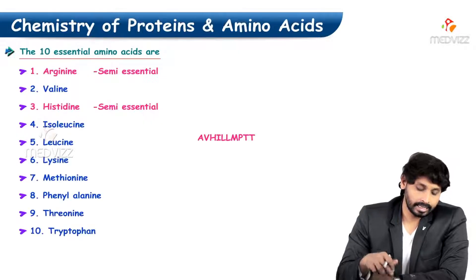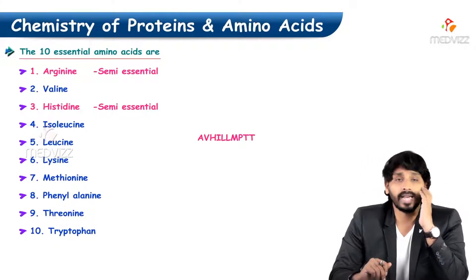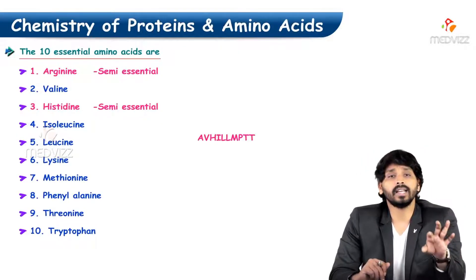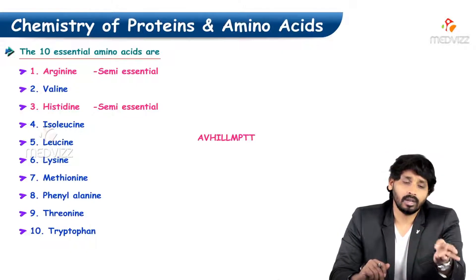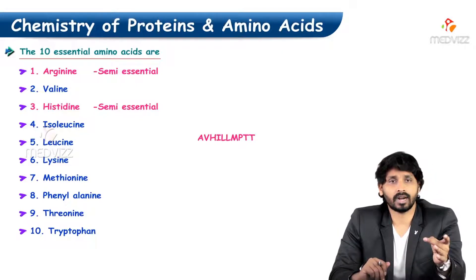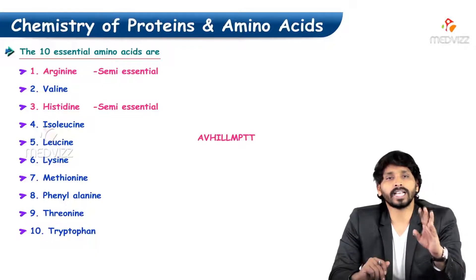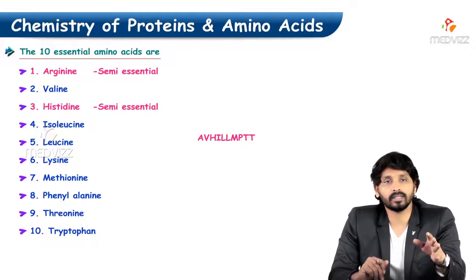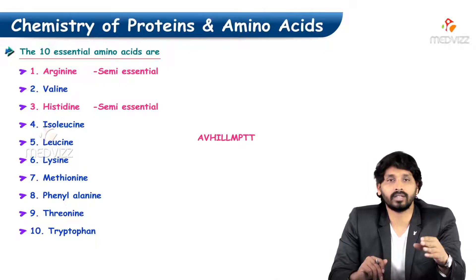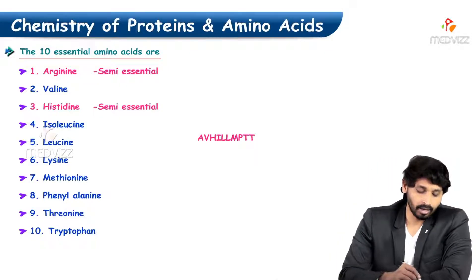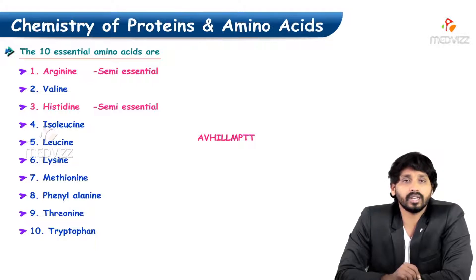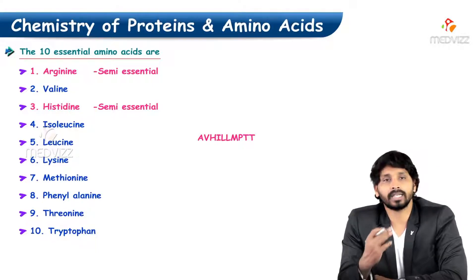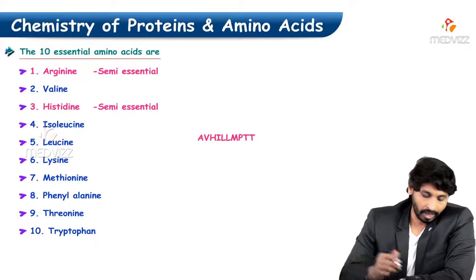There are 10 essential amino acids, though out of those 10, two are semi-essential. Most textbooks mention 10 essential amino acids, while some mention 8. On the slide, the semi-essential ones are shown in red and the rest of the essential amino acids are shown in blue.